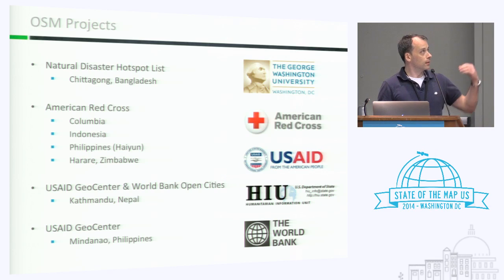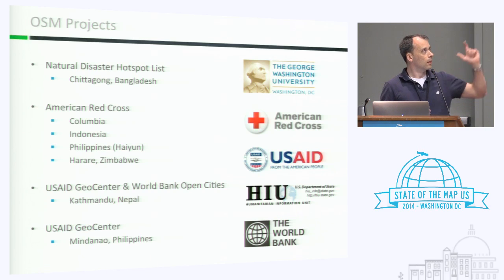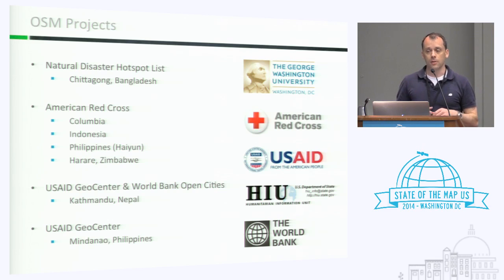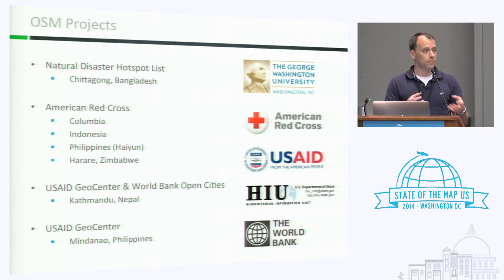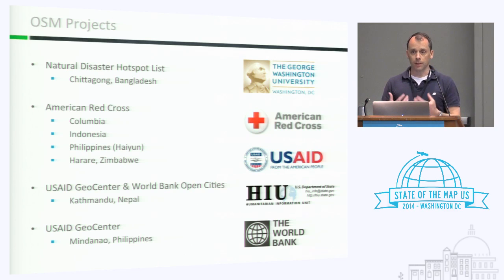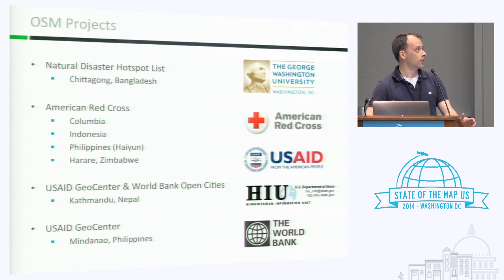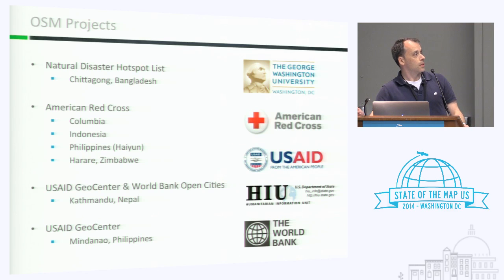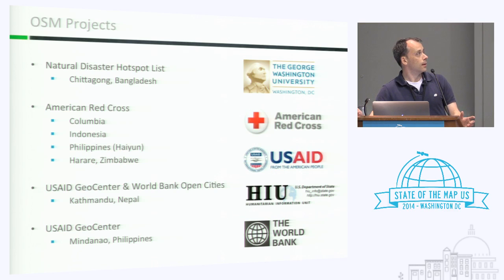When we were working with the American Red Cross, we were looking in Colombia and Indonesia, where the Red Cross was working with their counterparts in those countries to build up the geospatial infrastructure that didn't currently exist. Last year we did a lot of work with USAID working in Kathmandu as part of the Open Cities project, and the HIU provided the imagery that really helped our students.